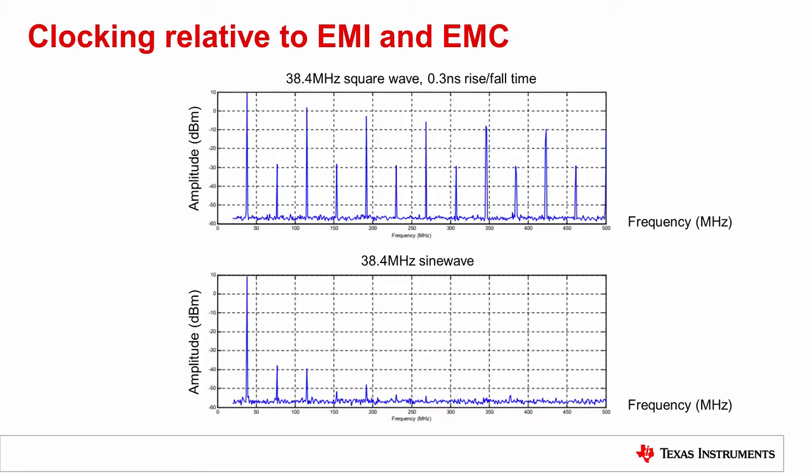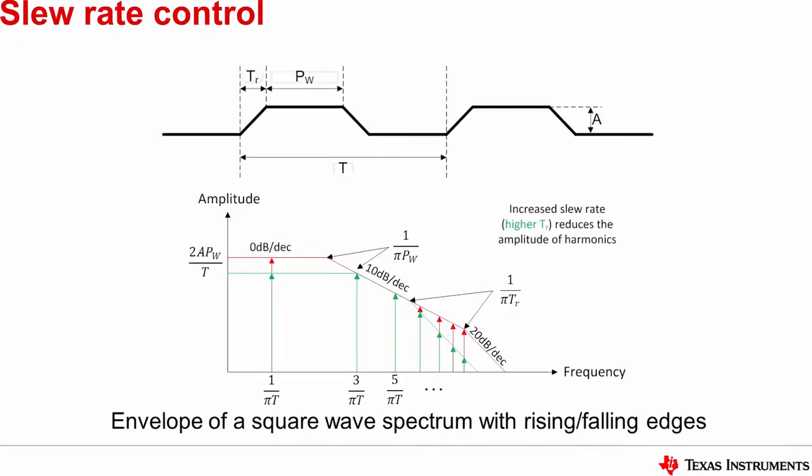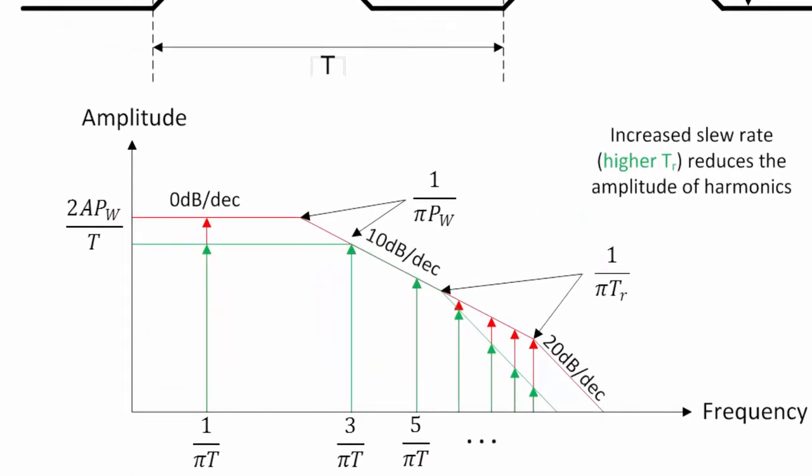Another common technique for controlling EMI is controlling the clock slew rate. In order to reduce the amplitude of the harmonics, simply reduce the slew rate of the clock edges. The rise-fall time of the edges of the square wave impacts the shape of the spectrum. Take a look at our trapezoidal clock waveform and its spectral envelope. Reducing the slew rate or increasing the rise time will decrease the amplitude of the harmonics, thereby reducing EMI.